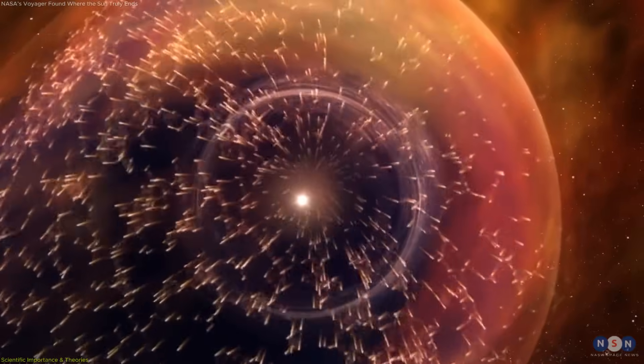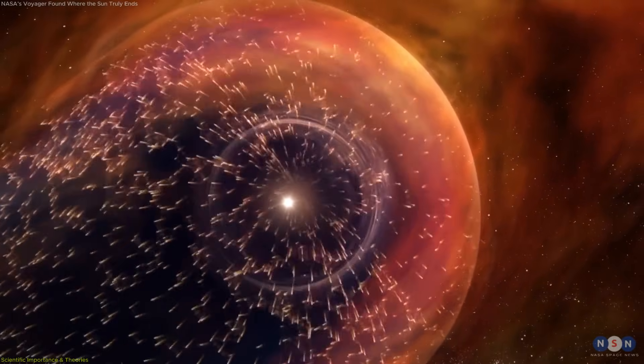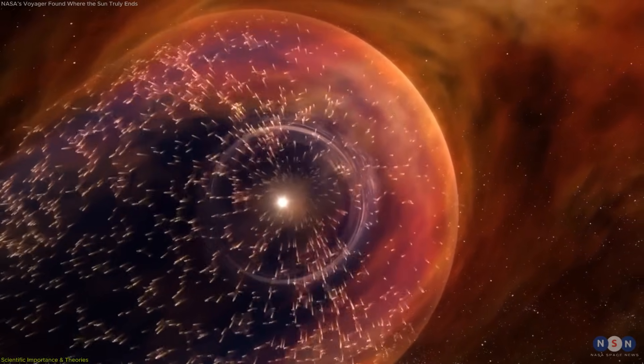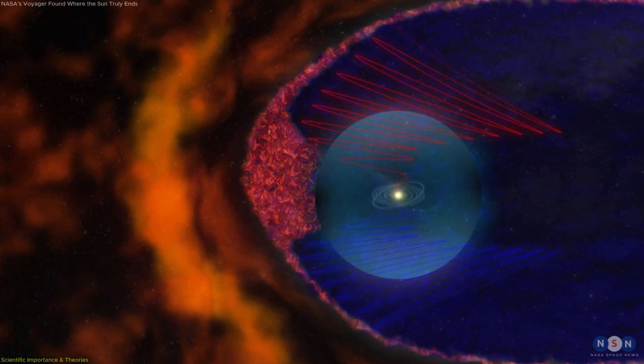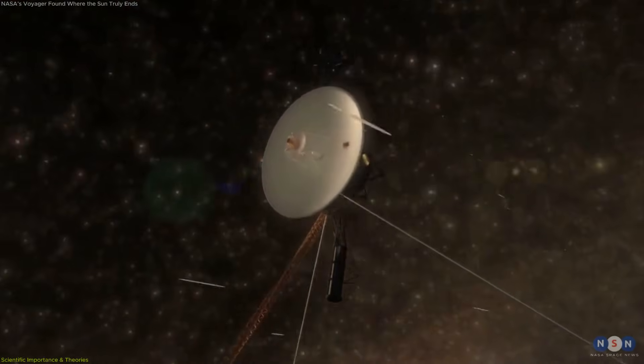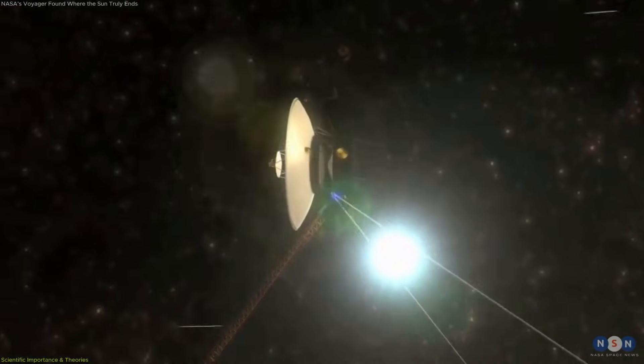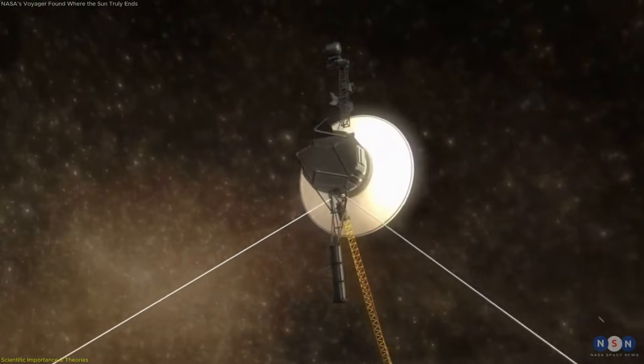Together, these observations indicate that the heliosphere is not a simple, spherical shell. It is shaped by the balance between the solar wind and the surrounding galactic environment, producing a complex magnetized boundary that changes over time. Voyager has provided the first direct evidence needed to test and refine these models, replacing decades of speculation with real data.